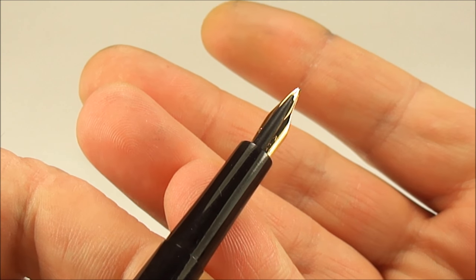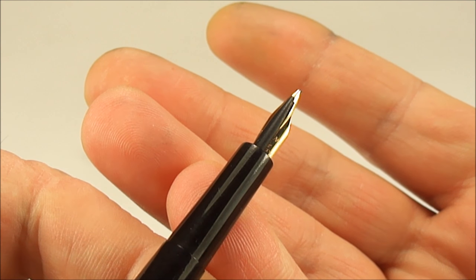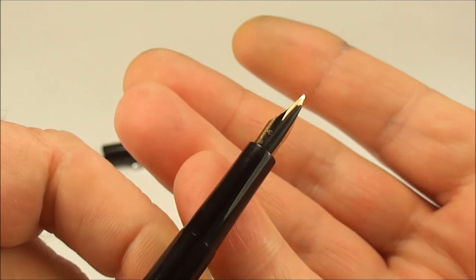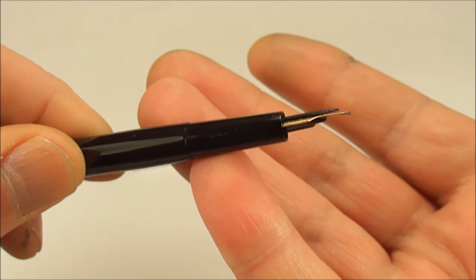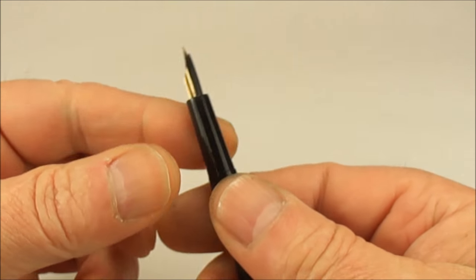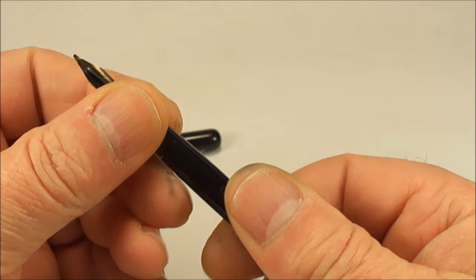You can't see the imprint because of the feed, but the nib imprint reads Swan number 1, 14 carat, Mabie Tod and Company made in England nib. So it's a number one nib. There's a sideways view. As I say again, it's got this over and under feed.